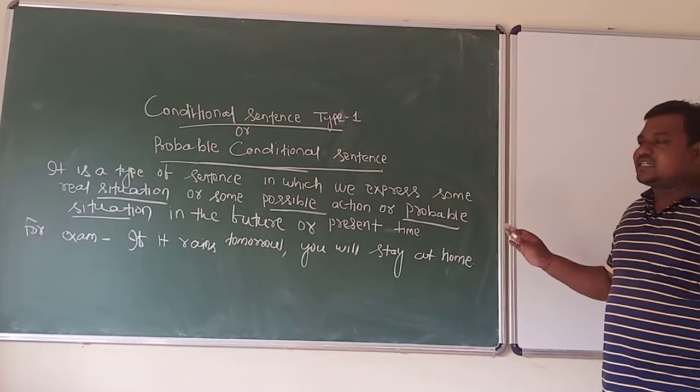The next use is to express some offer. For example: if you like me, I will help you. So this is an offer — that means, in the main clause part, the offer is given. If you like me, I will help you. If you do not accept the offer, that means if you do not like me, then I will not help you. That is why, to express an offer, we have to take the help of probable conditional type, or conditional sentence type 1.